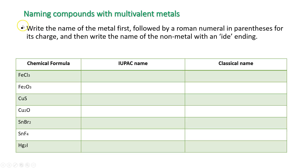When naming compounds with multivalent metals, we first write the name of the metal, followed by a Roman numeral in parentheses for its charge — to indicate what the charge is because it can have more than one charge — and then we write the name of the non-metal with an -ide ending. Let's take a look at some examples.